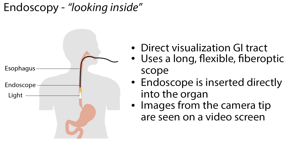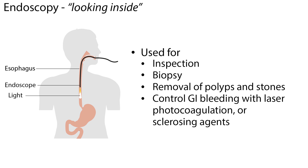Endoscopy procedures allow for direct visualization of portions of the GI tract by using a long, flexible, fiber optic scope. Endoscopy means looking inside, in which an endoscope is inserted directly into the organ and images from the camera tip are seen on a video screen. It may be used for inspection, biopsy, removal of polyps and stones, and to control GI bleeding with laser, photocoagulation, or sclerosing agents. Most endoscopic procedures are performed on an outpatient basis.